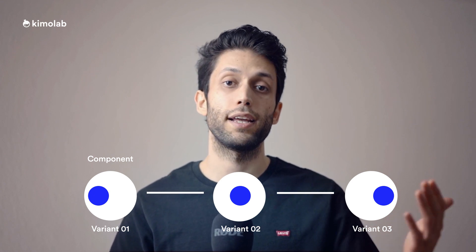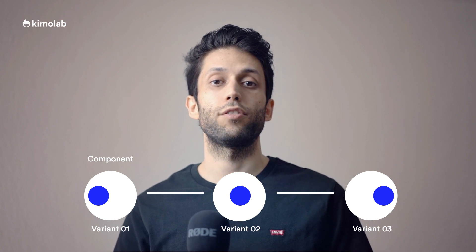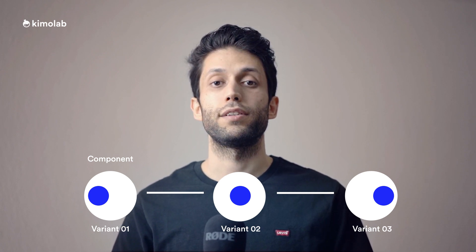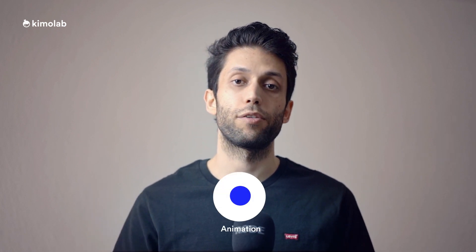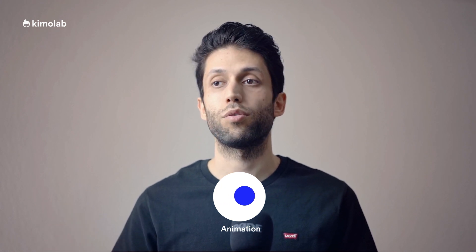The overall process of creating a component with a transition animation between different variants is quite simple. We need to create a component, then create different variants of it, use the prototyping tool to connect the different states together, and then define the type and behavior of the animation. That is the general logic for creating micro interactions or simple animations in prototyping tools like Figma.